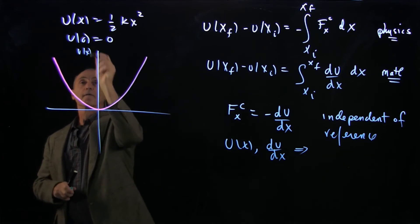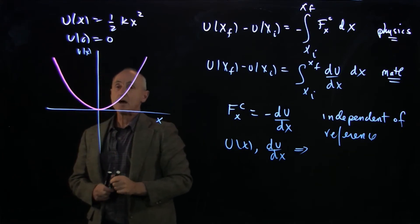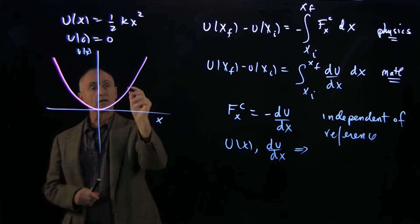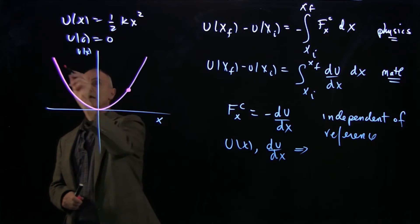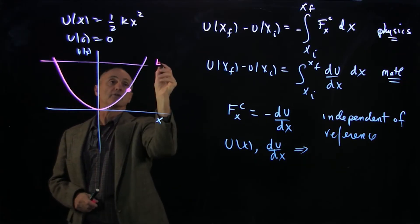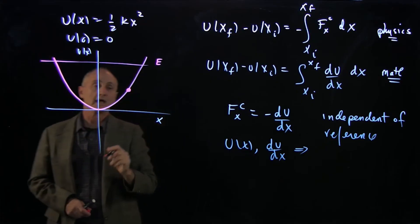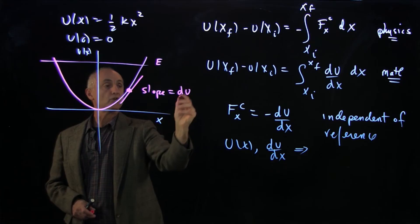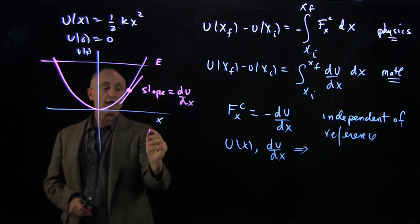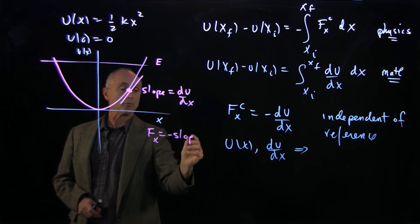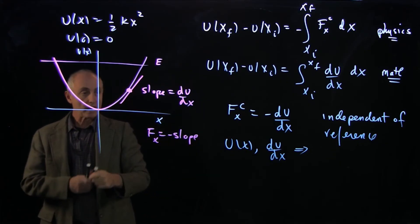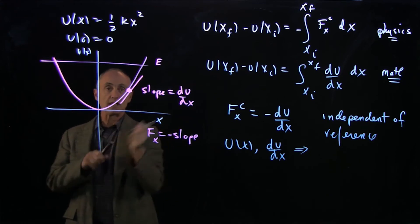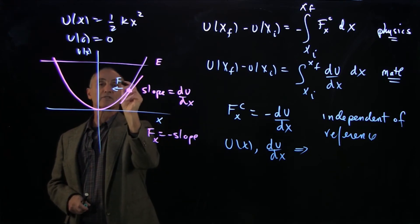So here's U of x versus x. Now we can talk about, at any given point, so suppose we're at a point here. Maybe our energy has some fixed value. Then the slope at this point is equal to dU/dx. And the force is minus that slope.